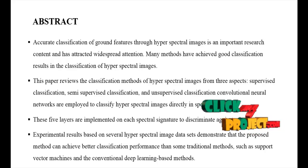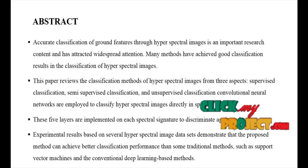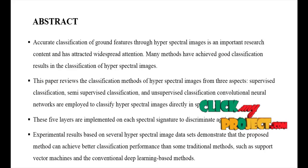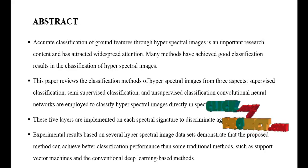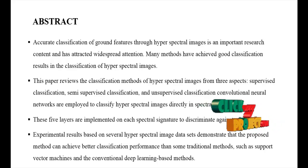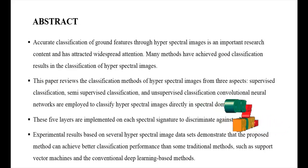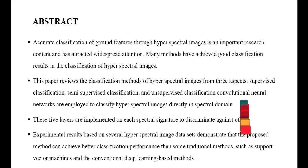A hyperspectral image is a satellite image. This covers supervised classification, semi-supervised classification, and unsupervised classification using neural networks on the hyperspectral image directly in the spectral domain. The five layers each capture the spectral significance against others. The proposed method achieves better classification than some traditional methods, implemented using SBM and a Convolutional Deep Neural Network design.